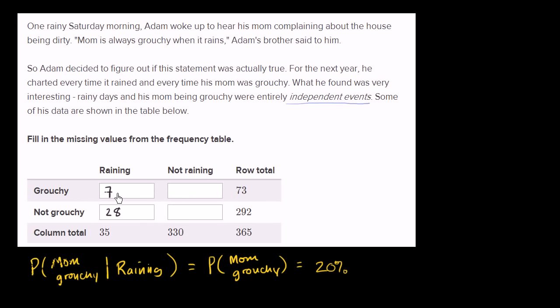And then if this is seven, then 73 minus seven is going to be 66.